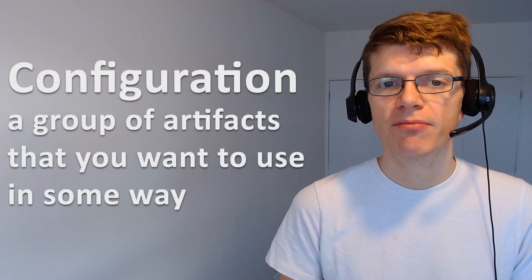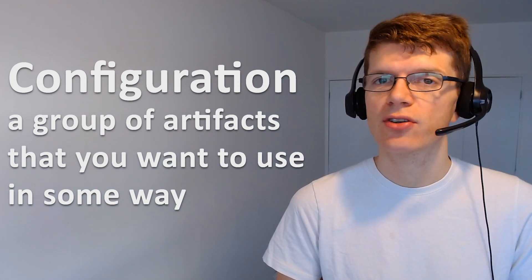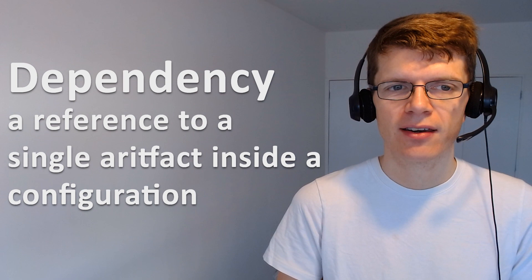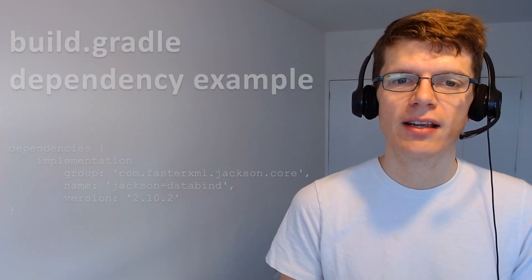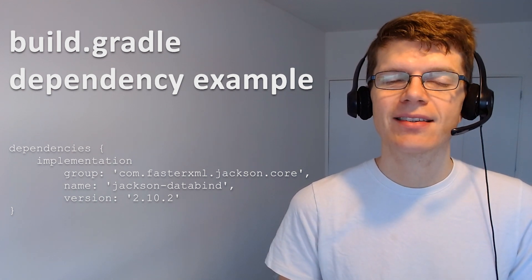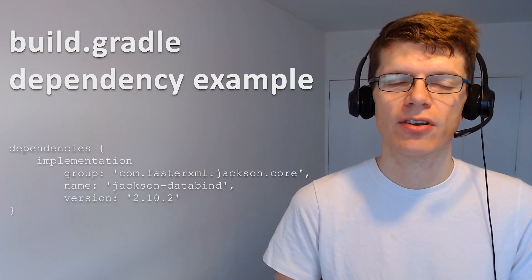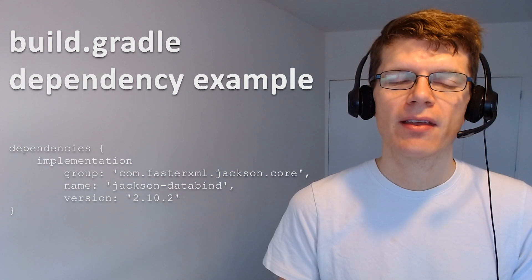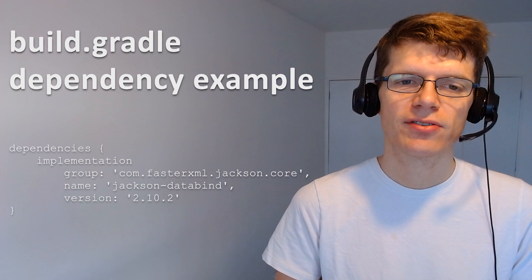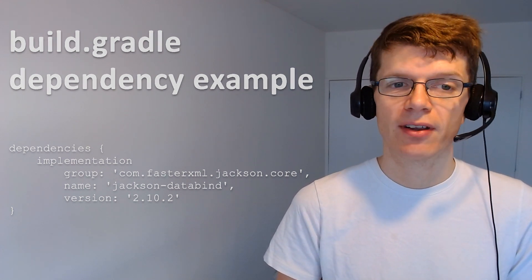Before we jump into a code example it's important to understand the basics of Gradle dependency configuration. A configuration in Gradle represents a group of artifacts that you want to use in some way, whereas a dependency is a reference to a single artifact that's grouped inside a configuration. Here's an example where we've got a dependency on Jackson DataBind in the implementation configuration. The implementation configuration used to be called compile in previous versions of Gradle but now that's been deprecated.